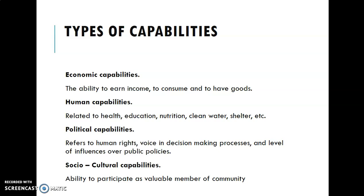There are four types of capabilities: economic capability, human capability, political capability, and socio-cultural capability. Economic capability refers to the ability to earn income, consume, and have goods. When someone in society has a job, they can buy goods — for example, a professor earns income and uses it to buy a car, food, clothing, and shelter for themselves and their children.